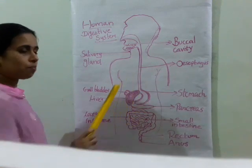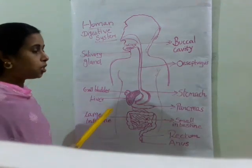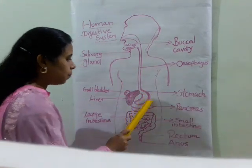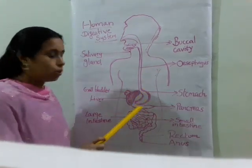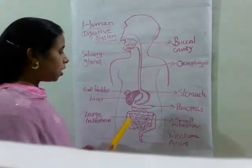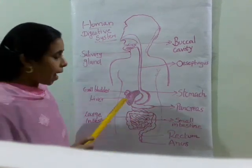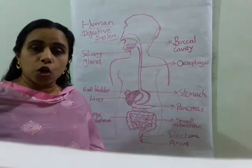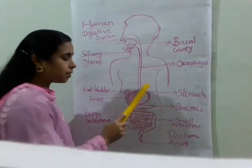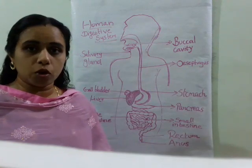Then the food reaches into the stomach part. The stomach is a U-tube-like structure. Inside the stomach, some gastric glands are present. These gastric glands secrete hydrochloric acid, mucus, and pepsin.